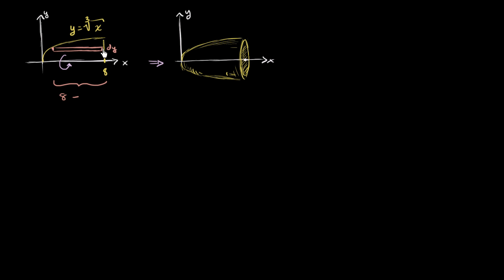You might already realize that we're going to be integrating with respect to y, so we really want everything in terms of y. This x value is a function of y. If y is equal to the cube root of x, we can cube both sides and get x is equal to y to the third power. So this distance right over here is going to be 8 minus y cubed, expressed in terms of y.